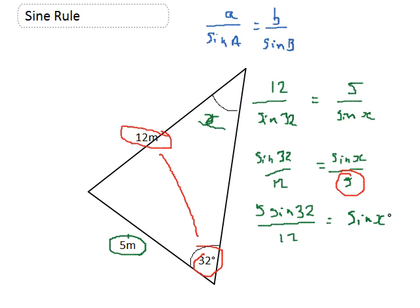So that's 5 times sine 32 divided by 12. That gives me a decimal.